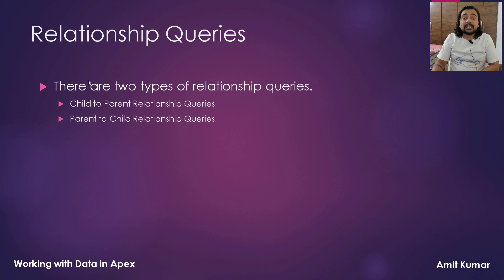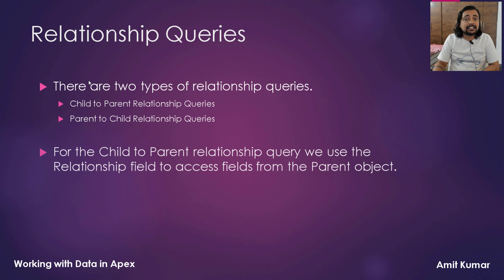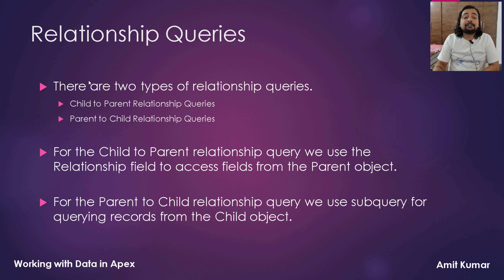There are two types of relationship queries: child to parent relationship query and parent to child relationship query. For the child to parent relationship query, we use the relationship field to access fields from the parent object. For the parent to child relationship query, we use a sub query for querying records from the child object.